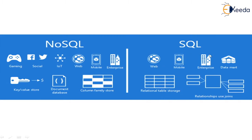In NoSQL we don't have relational structure, but where some relational kinds of joins and relational tables are required, NoSQL provides key-value stores, document-type databases, and column family stores.